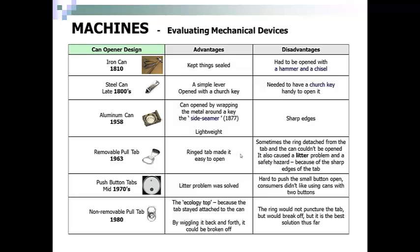Then came push-button tabs in the mid-1970s. The litter problem was solved, but it was hard to open, and customers didn't like using cans with two buttons. Then, in the 1980s, they developed the non-removable pull tab, called the ecology top, because the tab stayed attached to the can. It's the one we currently have — by wiggling it back and forth it could be broken off, but it's the best solution we have so far.